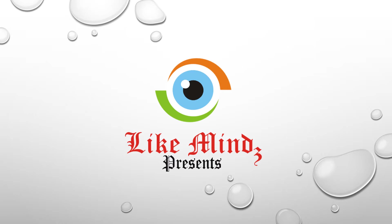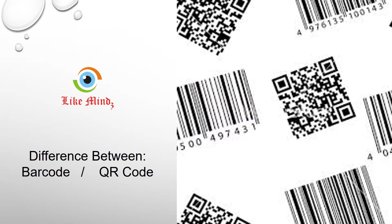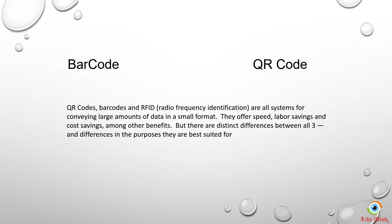Welcome to LikeMinds difference between series. In this slide we'll see the difference between barcodes and QR codes. Barcodes and QR codes are systems for conveying large amounts of data in a small format. They offer speed, labor saving, accuracy, and cost saving among other benefits.